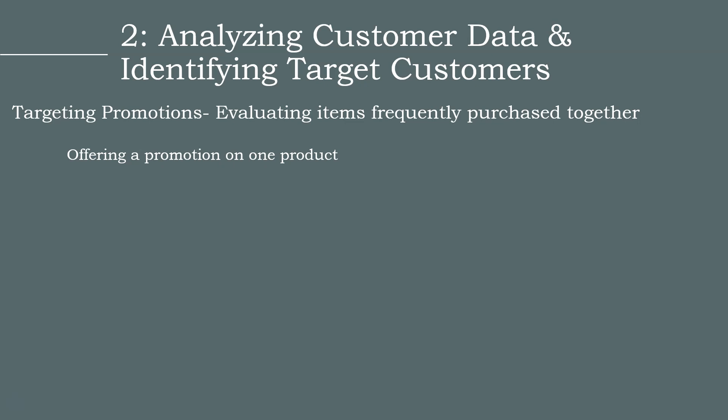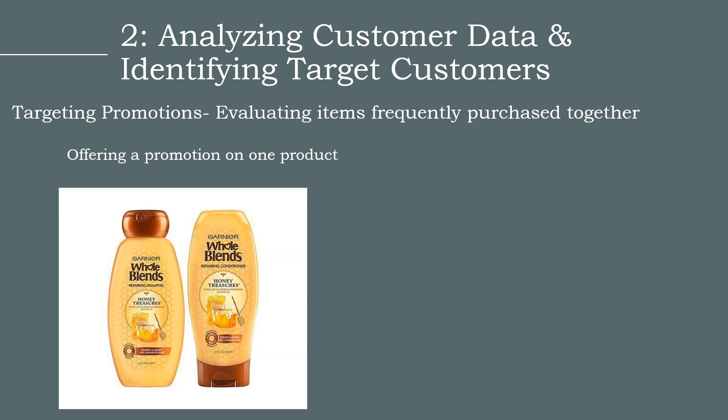Retailers often focus on items that are usually bought together, such as shampoo and conditioner. Even though you may not need both items at the same time, you may feel compelled to buy them together, which can lead to unplanned purchases. For example, imagine you go to the store with the intention of buying shampoo. You see that it's full price, but the conditioner next to it is 50% off. You may end up buying the conditioner even if you don't need it now.